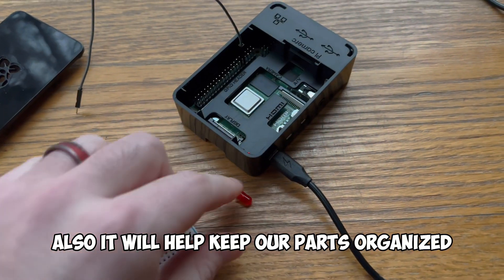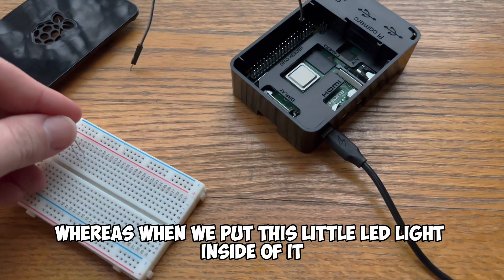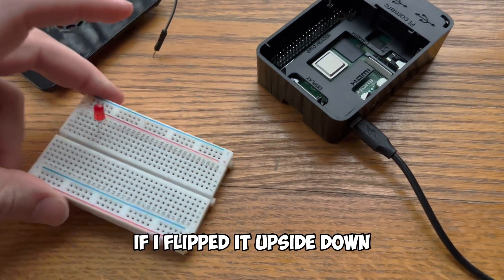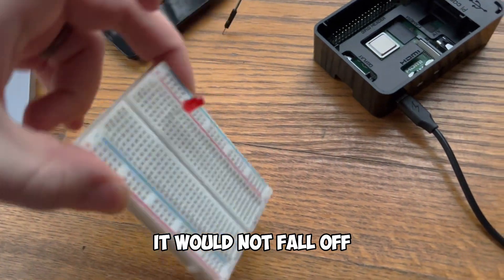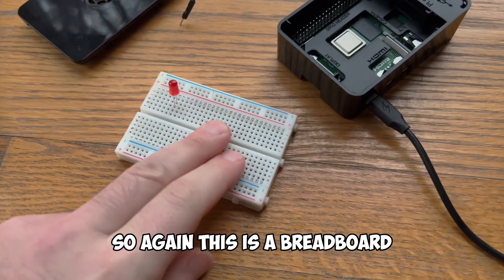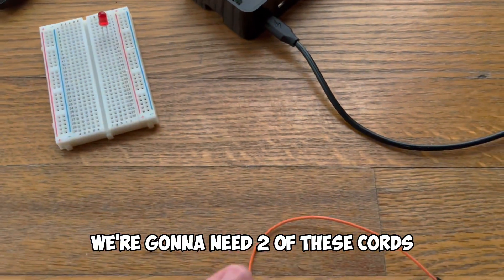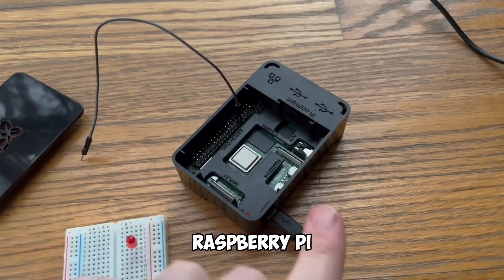Also it will help keep our parts organized whereas when we put this little LED light inside of it if I flipped it upside down it would not fall off. So again this is a breadboard it's great for prototyping. We're going to need two of these cords, an LED light, Raspberry Pi,